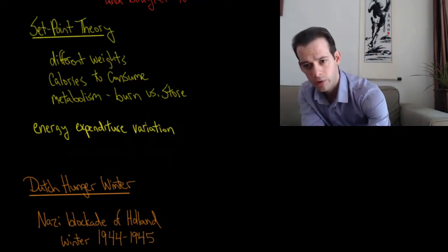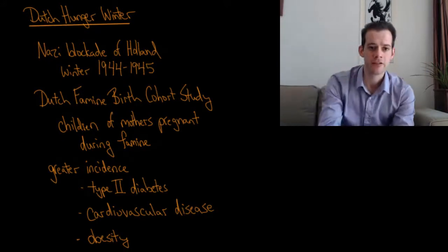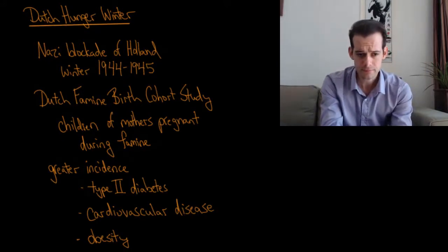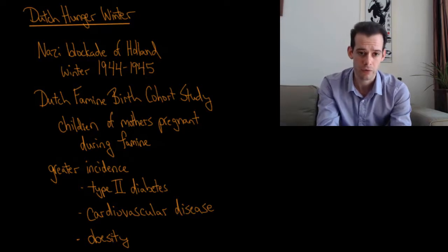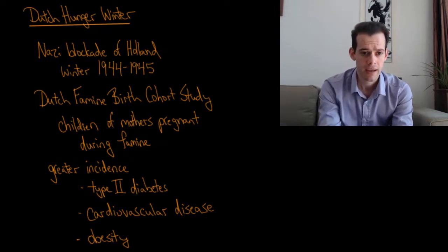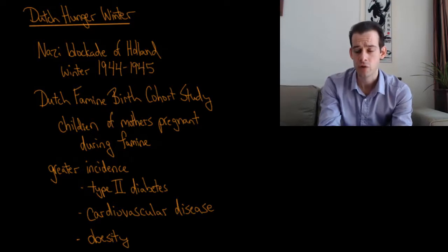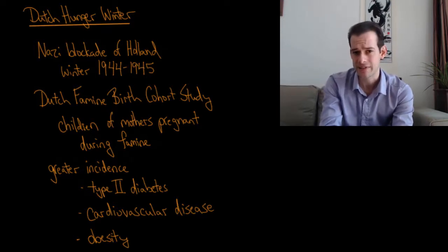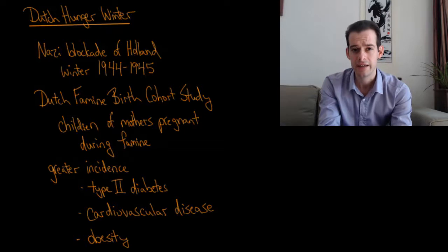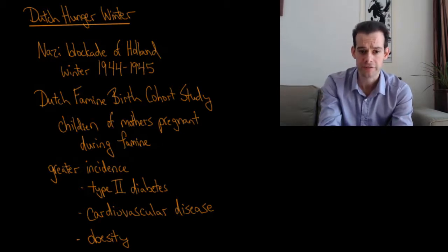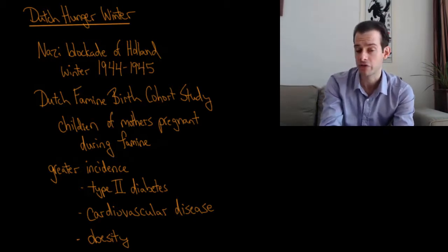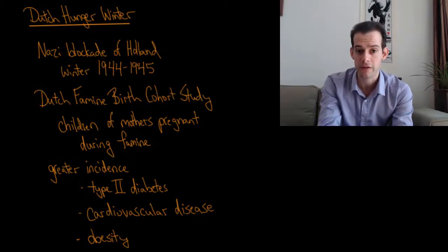The last thing I'd like to talk about for hunger is the Dutch hunger winter. In the winter of 1944 to 1945, the Nazis blockaded Holland. What this meant is that many people starved. There was a famine lasting for about three months. Researchers have looked into this famine and they were particularly interested in the infants that were born just before, during, or after this brief three-month famine. This is known as the Dutch famine birth cohort study.